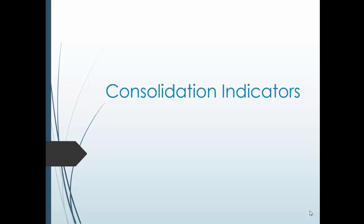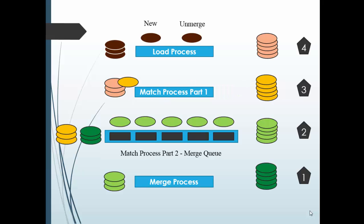The consolidation indicator changes as per the process. We know there are several processes like the stage process, land process or load process, match process, and merge process. The consolidation indicator normally changes between the load process and the merge process. In between there is also the match process. During the load, match, and merge processes the consolidation indicator values change.